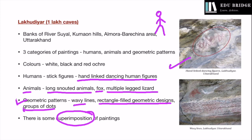There is also some superimposition of paintings at Lakhudiyar. This means that if a rock already had a painting on it, the artist would paint over the existing one rather than finding a new rock surface. We do not know exactly why this practice was followed, but it was a common feature of almost all prehistoric painting sites.